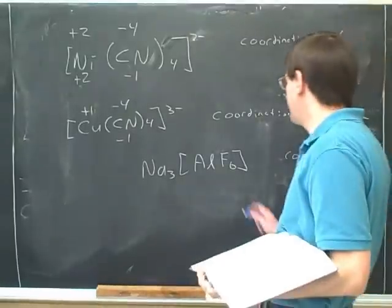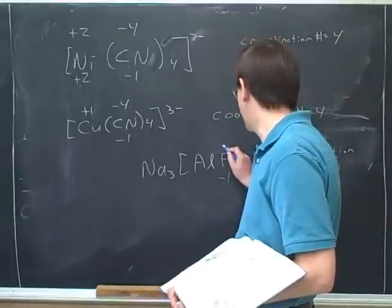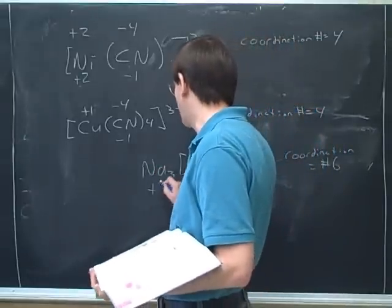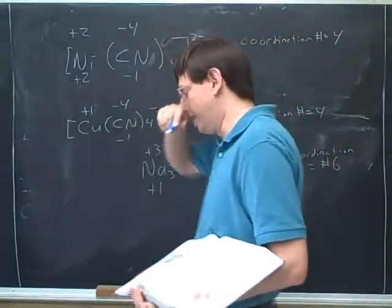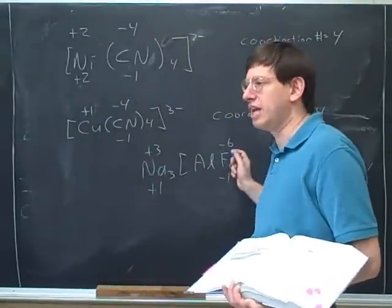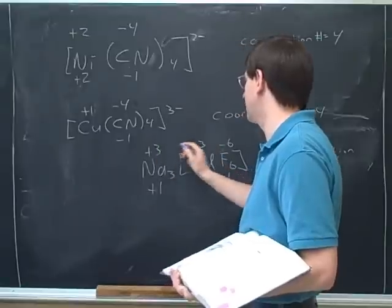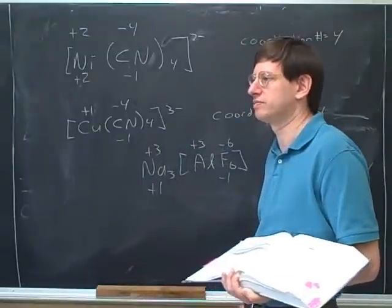So from the periodic table, we know each fluoride has a negative one charge. So that's negative six overall. And from the periodic table, we know each sodium has a plus one charge, which is plus three overall. But we know that since this is the full coordination compound, it should be neutral overall. So this has to be plus three. So we get three plus three minus six is zero.